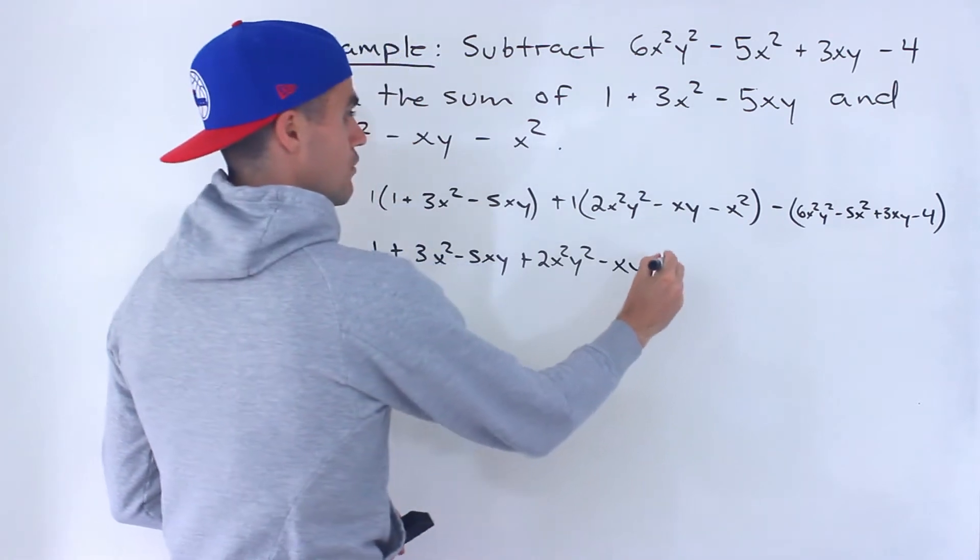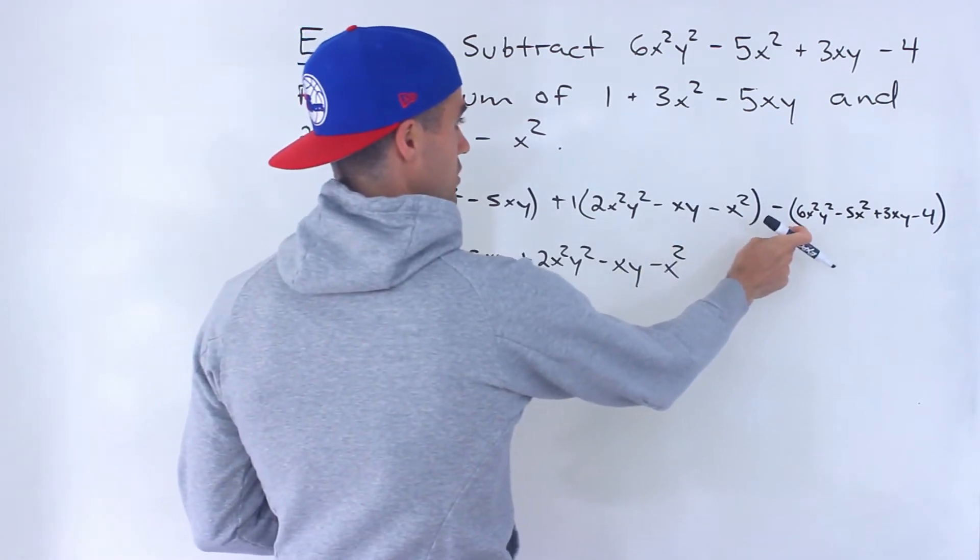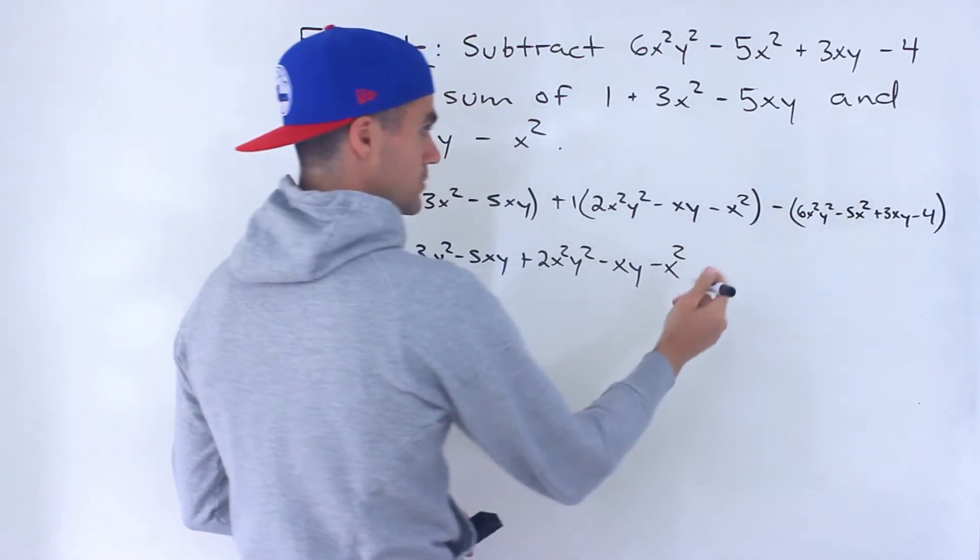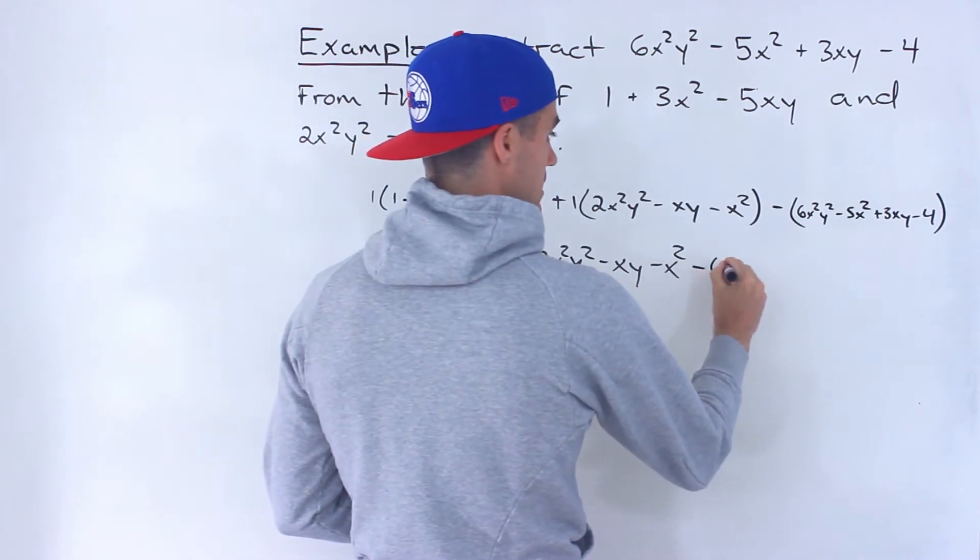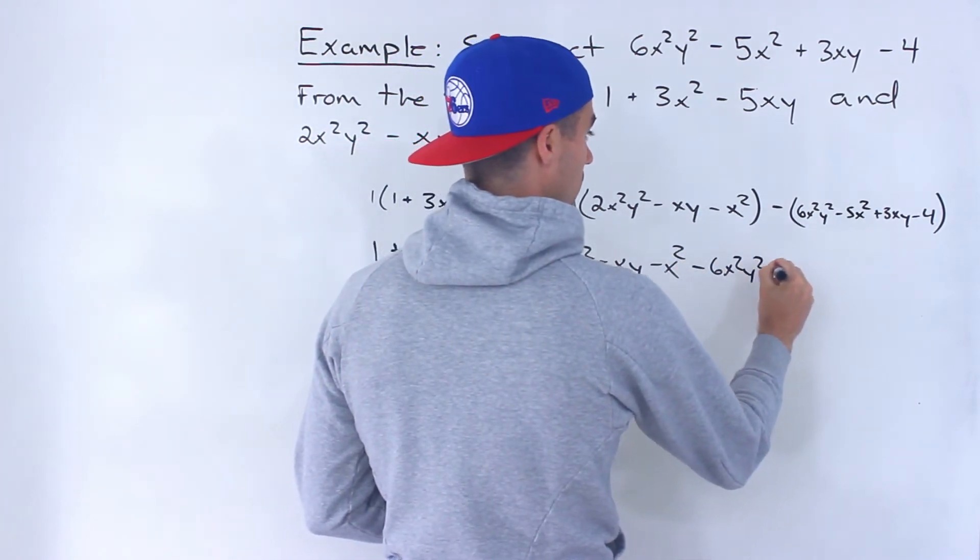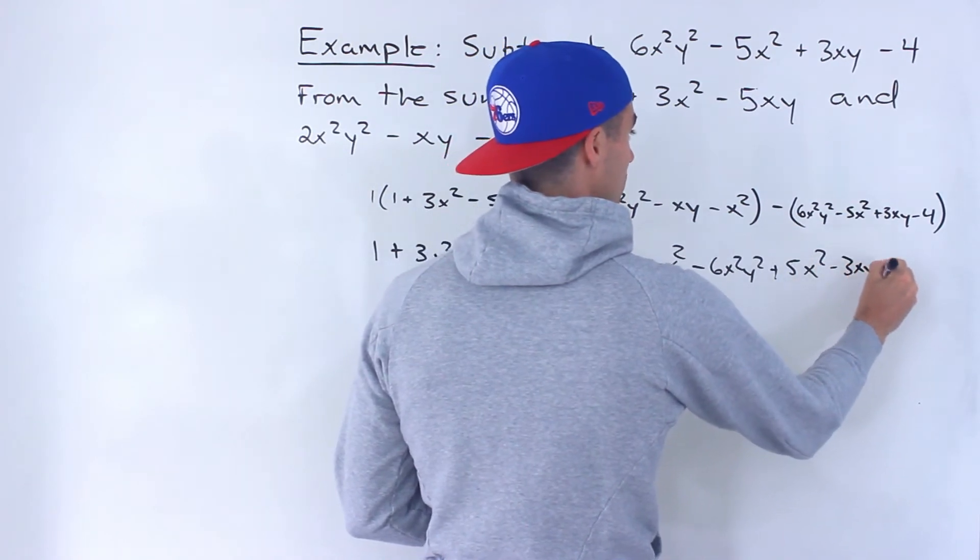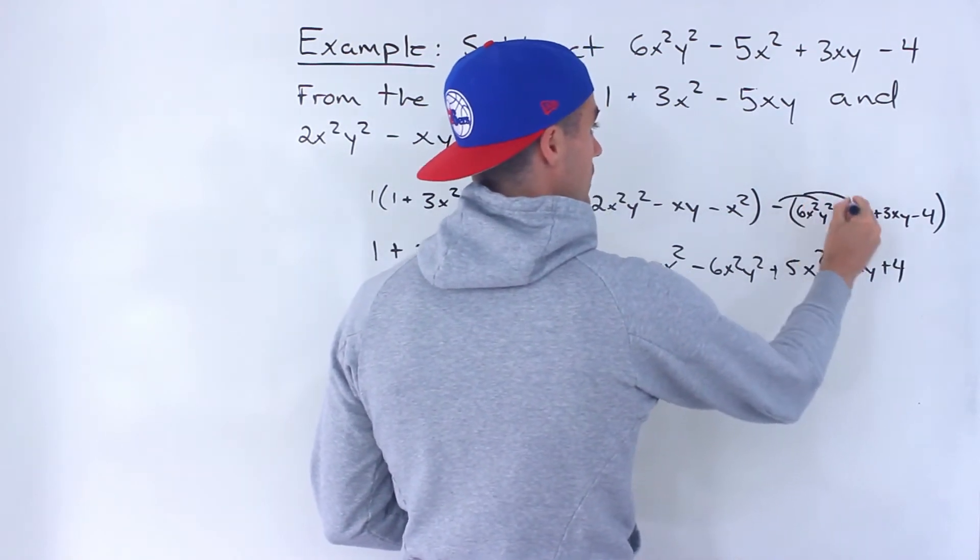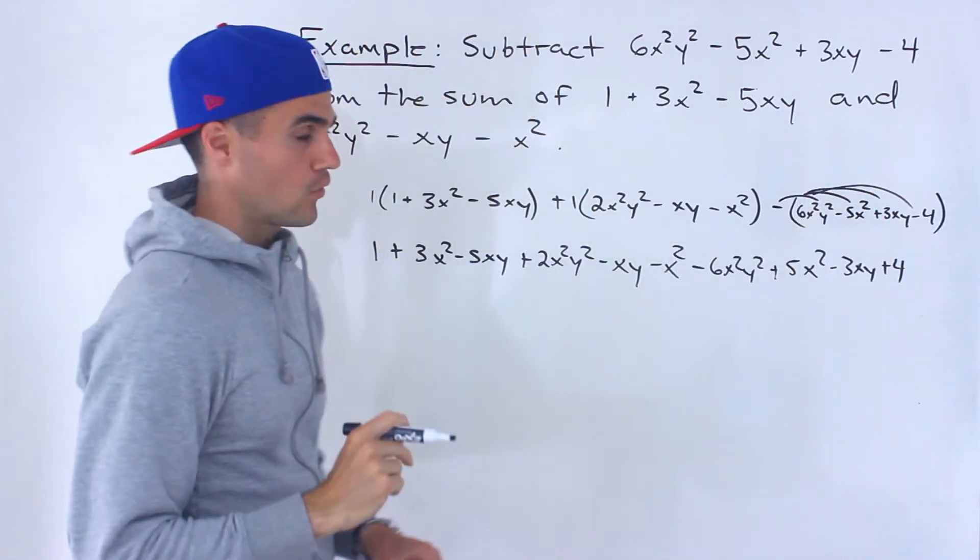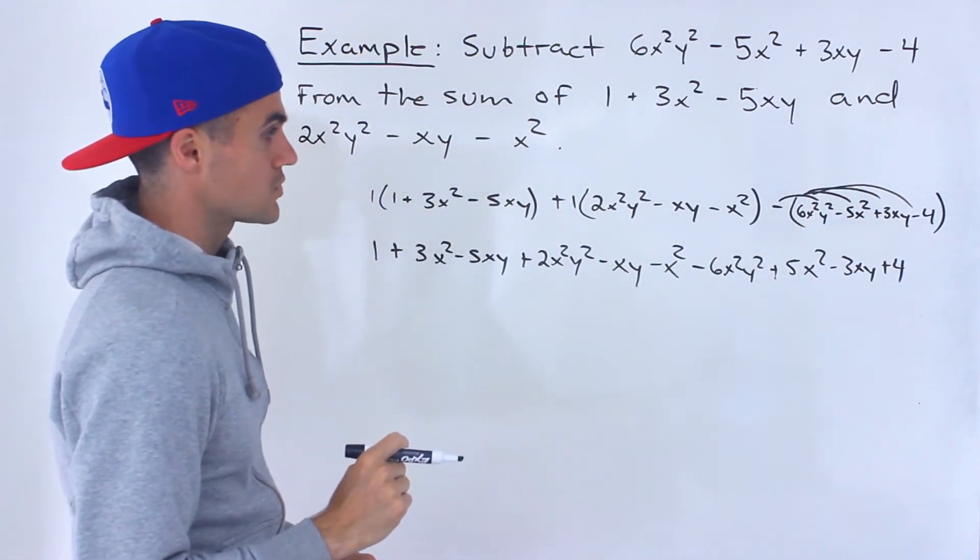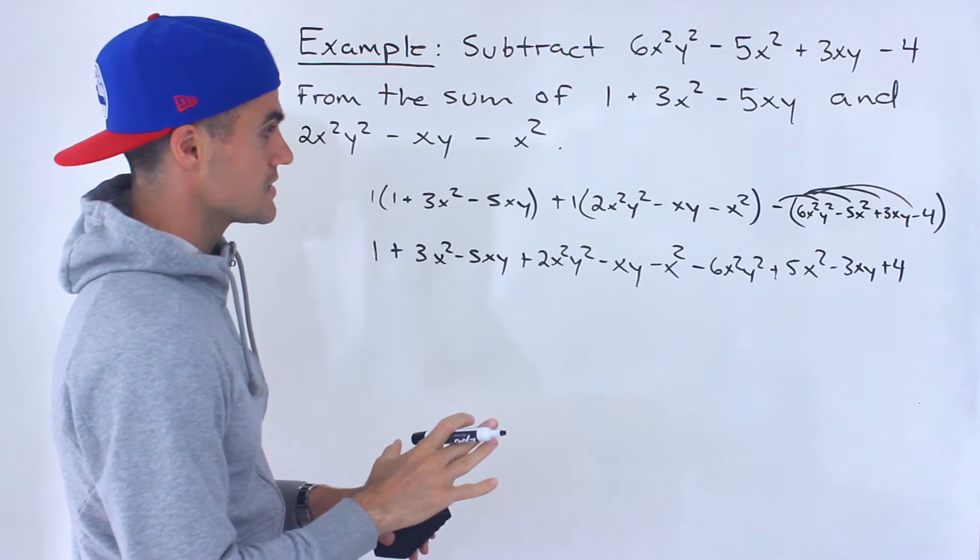And then this expression here, we're going to distribute the minus. So we're going to have -6x²y² + 5x² - 3xy + 4. So that negative gets distributed to all four components of that expression. So notice all the signs change.